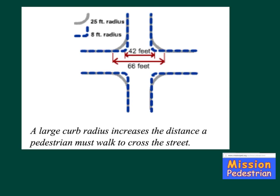In this diagram we observe a particular geometry wherein 8-foot curbs are associated with a pedestrian crossing distance of 42 feet, whereas 25-foot curbs are associated with a pedestrian crossing distance of 66 feet. Because the corner radius is often a compromise, its effect on both pedestrian and vehicle movements should be thoughtfully considered.